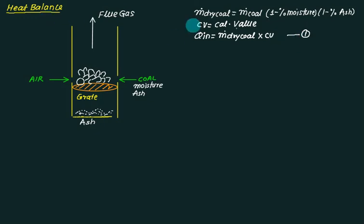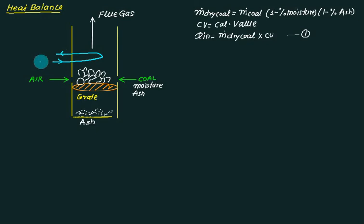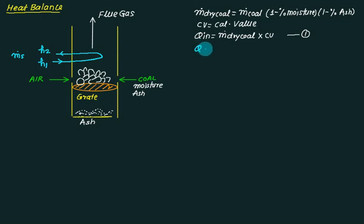In the heat balance, we find how this heat has been utilized for various purposes. First, some heat is carried by steam. h1 is the enthalpy at inlet, h2 is the enthalpy at outlet, and m_dot_s is the mass of steam. Heat gained by steam equals mass of steam multiplied by (h2 minus h1).